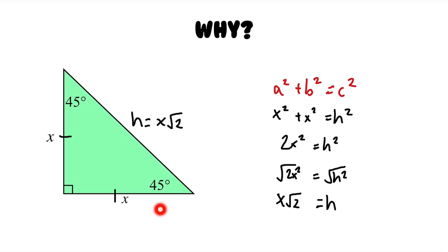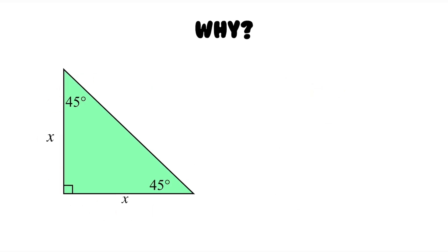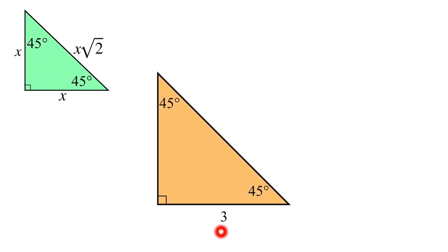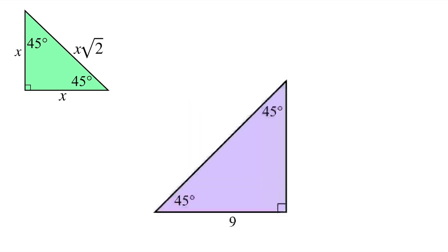We can use this pattern to find the side lengths of any 45-45-90 right triangle, as long as we're given one leg. If the leg length is 3, the other leg is also 3, and the hypotenuse is 3 root 2. If the leg is 9, the other leg is also 9, and the hypotenuse is 9 root 2.